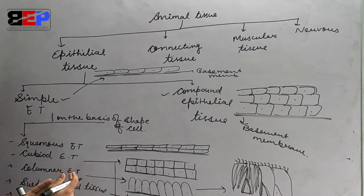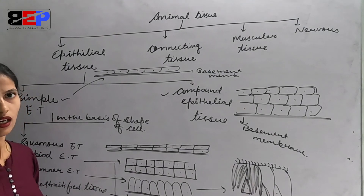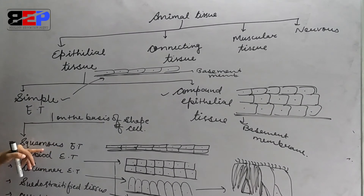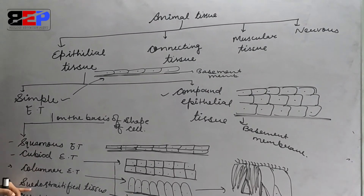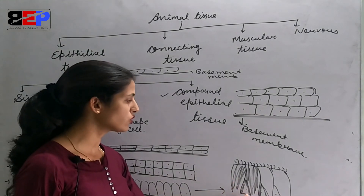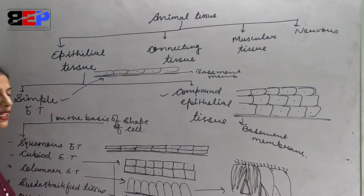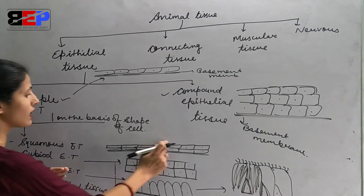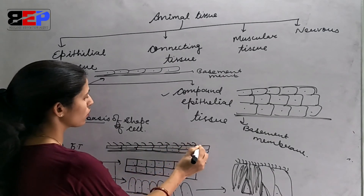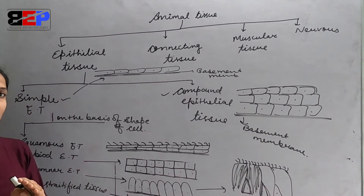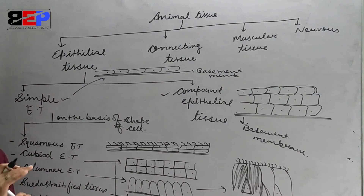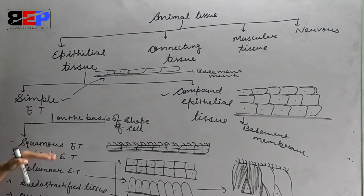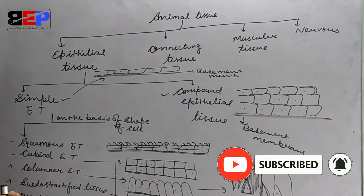These are the classifications of simple epithelial tissue on the basis of cell type: if flat cells are present, it is squamous epithelium; cube-like cells give cuboid epithelium; column-like cells give columnar epithelium; mixed column and triangular cells give pseudo-stratified tissue; and ciliated epithelium has hair-like cilia on the cells. The next classification of simple epithelial tissue is on the basis of function.